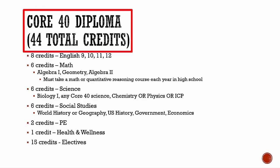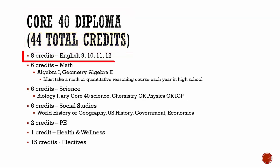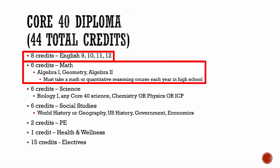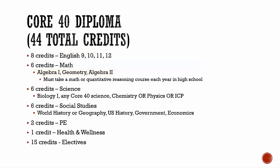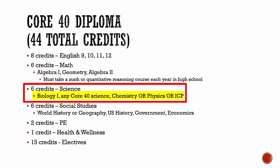If you are on track to earn a Core 40 diploma, you must earn 44 total credits by graduation. This includes eight English credits, six math credits — which requires Algebra I, Geometry, and Algebra II — six science credits, which include two Biology I credits, two credits in either ICP, Chemistry, or Physics, and two remaining credits in any Core 40 science class.